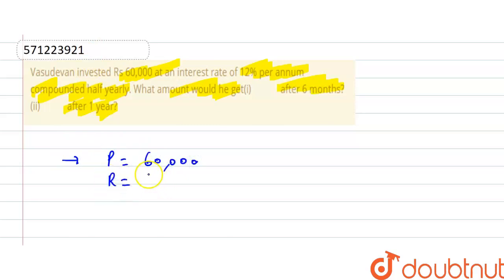of interest given is 12% per annum, that is 6% for six months, because we have to calculate for six months. And the time period is compounded half-yearly, meaning for six months n equals one.